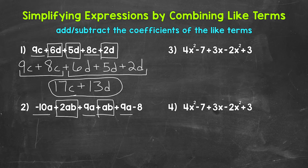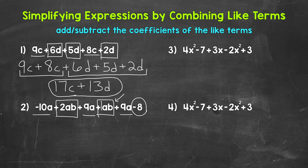We also have ab. This term does not have a coefficient written in front — whenever we see this, there is an understood coefficient of 1, so this is 1ab. It's helpful to write that 1 in when combining like terms, so you know you need to combine it. We also have a constant term of negative 8, which I'll circle to separate it. Even though we don't have anything to combine it with, we still need to include it in the simplified expression. A term takes the sign in front of it. Now we can rewrite this expression with the like terms next to each other.